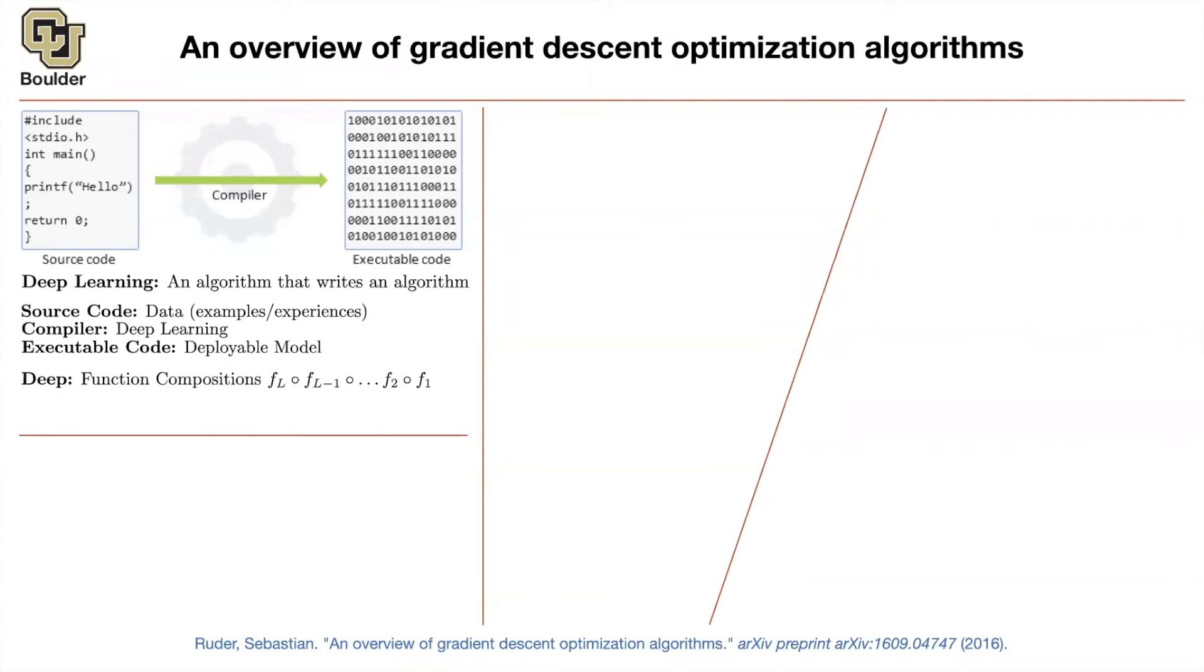So let's break down the words deep learning. What does deep mean? Deep means you have a bunch of function compositions. So you're composing functions. You have X, then you have F1 of X, then you apply on that F2 of X, and so on. And you keep doing that up until you get L.